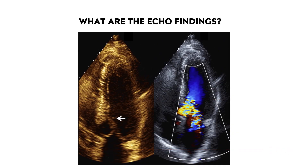Here's another echocardiographic finding of LVOTO. Sometimes you'll actually see SAM — contact of the anterior leaflet of the mitral valve with the septum in systole — but it's harder to see than you'd expect. Since SAM is occurring, the anterior leaflet of the mitral valve doesn't coapt properly with the posterior leaflet, which causes mitral regurgitation.